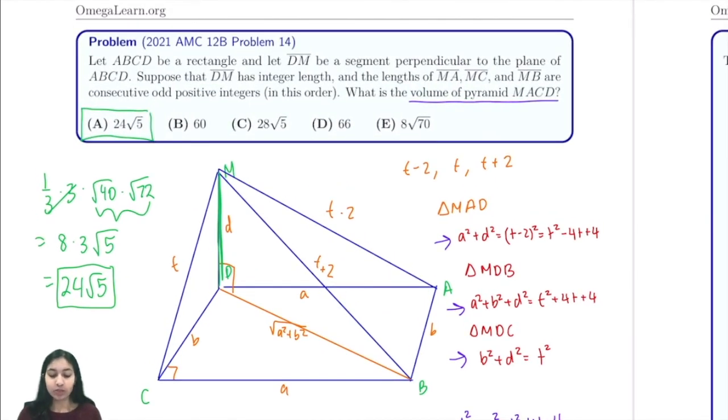So in general, these kinds of problems you want to take the information you're given and set up a system of equations of some kind, especially in this case when you have all these perpendiculars and these consecutive odd positive integers. Although it seems daunting, you just have to assign them variables like we did here, and that'll help simplify the problem. Thanks for watching.